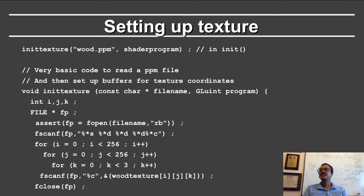Let's talk about setting up the texture. We call this initTexture function, which reads in a Portable Pixel Map or PPM file. PPM files are not very common nowadays, so you can replace this with an image read for your favorite file format. It takes in a pointer to the file name and the program corresponding to the shader program. This is just old-style C code for reading a file.